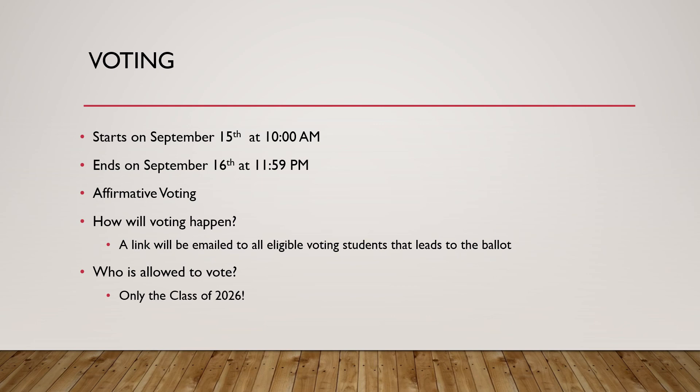Now let's talk about voting. This year, voting will start on September 15th at 10 a.m. and end on September 16th at 11:59 p.m. We will be offering affirmative voting ballots, meaning a voter can vote for as many candidates as they want. The ballot link will be emailed to all eligible voting students, and you as a candidate can email it to your friends as well. Remember to only send it to the Class of 2026, as they are the only ones who can vote in this fall election.